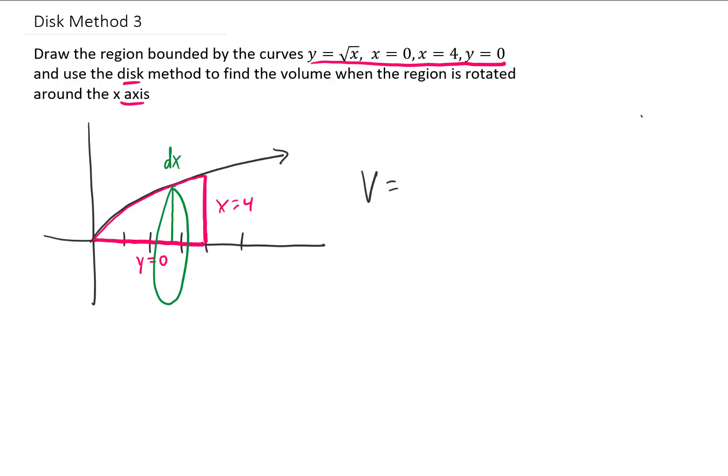Now again, our volume is going to be the sum of all the little volumes of each one of those DISCs. Each one of those DISCs has a volume of pi r squared times dx in this case. And you'll notice that no matter where our x is, the radius of that little DISC is given by the function the square root of x.